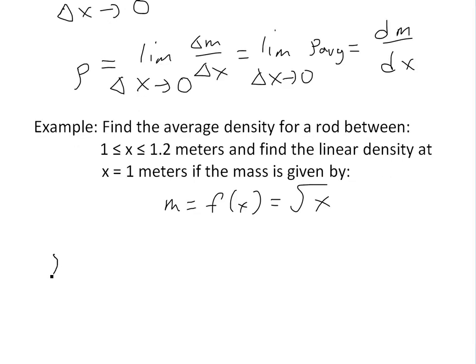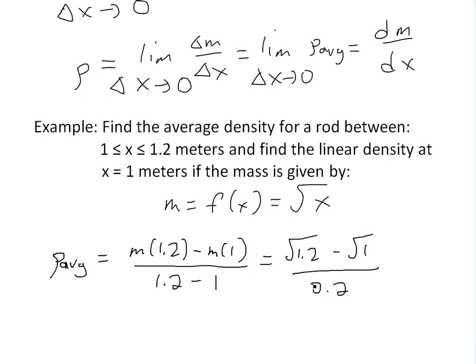To find the average linear density, we just write down rho average from 1.2 to 1. This equals m of 1.2 minus m of 1, all divided by 1.2 minus 1. Then this is going to be equal to square root 1.2 minus square root of 1, that's just 1, divided by 0.2. Just plug this into a calculator, you will get 0.48 kilograms per meter. So this is the average linear density from this segment.